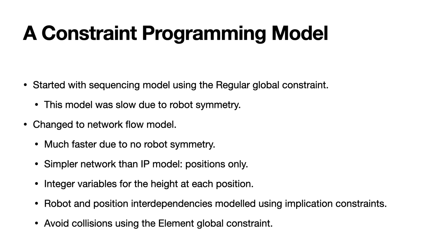In this new CP model the network flow is much simpler than the IP network flow. In this network flow we only have positions — we don't have the complex height and carrying state. Instead we have integer variables representing the height at each position. The value of these integer variables contains the height rather than encoding the height into the network flow. We then have robot and position interdependencies which we model using implication constraints, and we know that implication constraints propagate very weakly. Finally we have element global constraints which we use to model collisions.